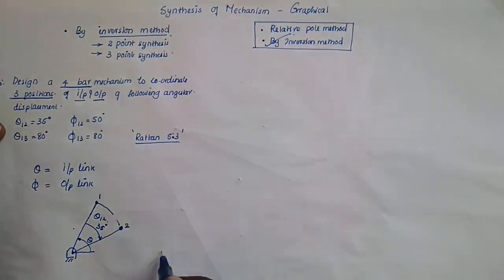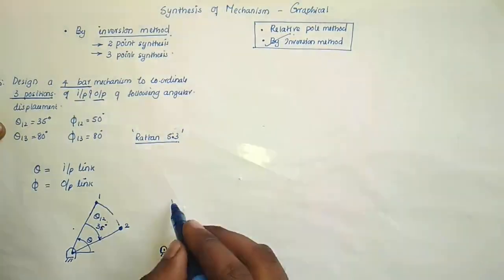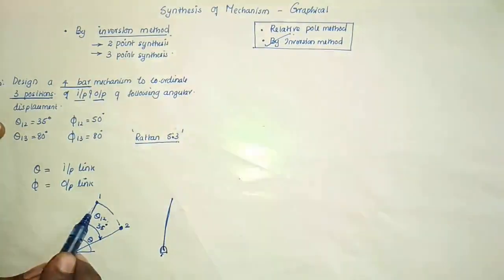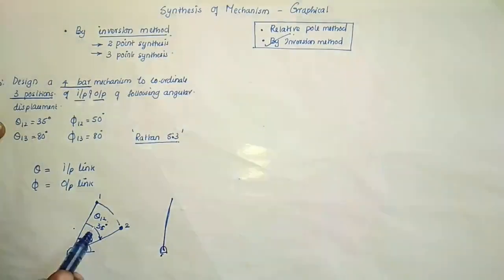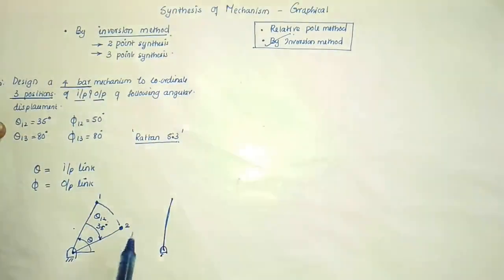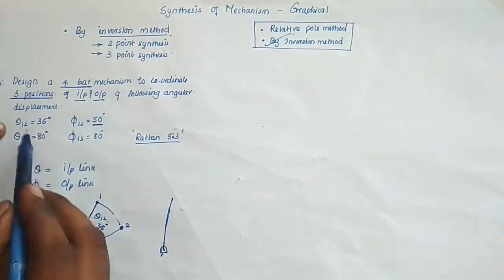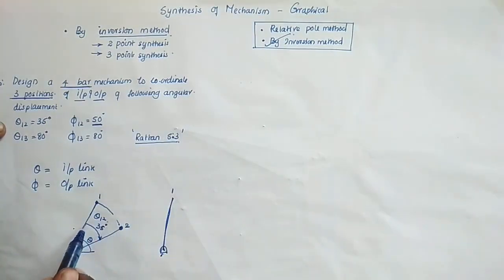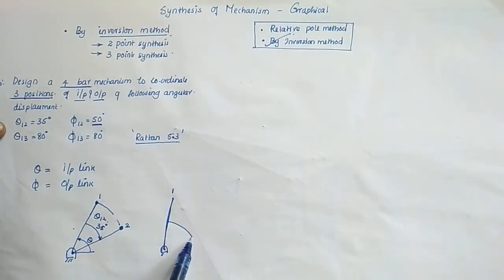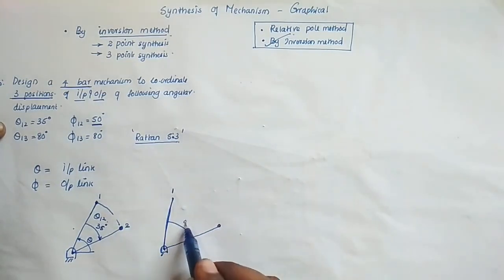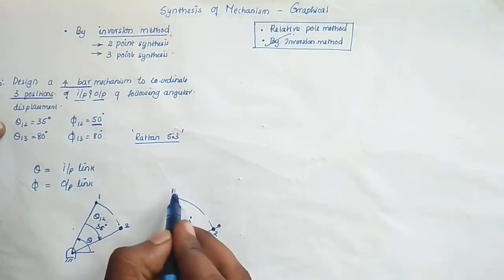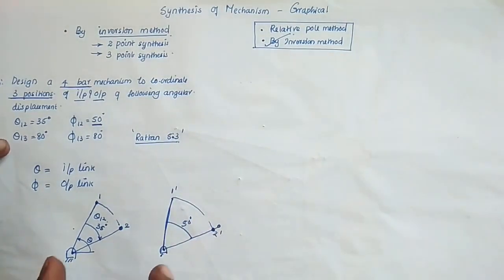Now phi one-to-two means: if the input theta angle displaces by 35 degrees from position one to two, the output angle phi should displace by 50 degrees. So if the input link moves to the 35 degree position, the output link should displace to 50 degrees — that is the second position. We need to design a four bar mechanism accordingly.